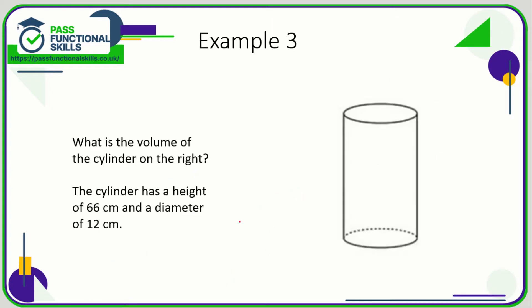In this final example, we've been told that the cylinder has a height of 66 and a diameter of 12. The formula for the volume of a cylinder is the area of the circle multiplied by its height.